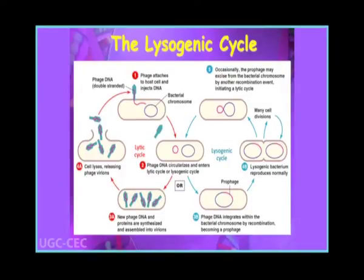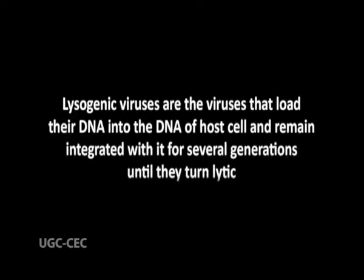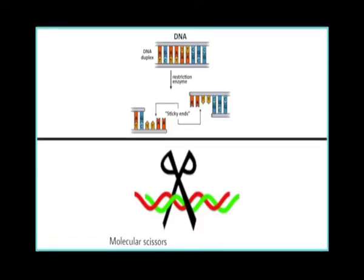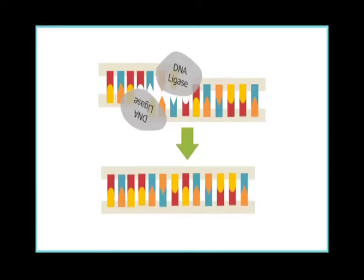The other group called lysogenic viruses is a group where viruses, after entering into the host cells, integrate their genetic material into the DNA of host cells. They load their DNA and integrate it with the DNA of the host cells. These viruses have the ability to synthesize enzymes called restriction endonucleases. The enzymes find their way into the nucleus of host cells and cut DNA at specific sites. Once the DNA of the host cells is cut, the viral DNA is integrated into it with the help of enzymes called ligases.